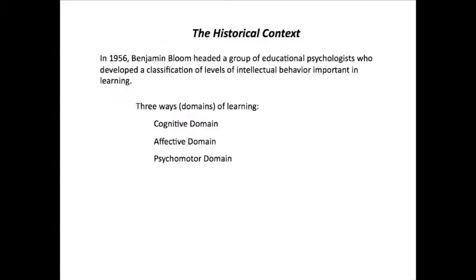Back in 1956, Benjamin Bloom and a group of colleagues met together and determined that there were at least three ways of learning, which they identified as domains — the cognitive domain, which is about the brain; the affective domain, which is about the value system; and the psychomotor domain, which is about movement or kinesthetic learning.